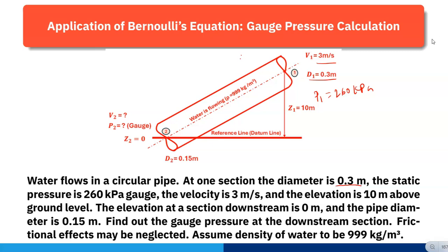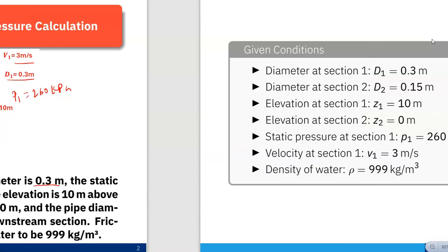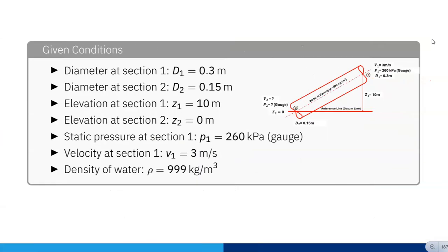Assume density of water to be 999 kg per meter cube. Now for given data: diameter d1 is 0.3 meter, diameter at section 2, d2, is 0.15 meter. z1 is 10 meter, z2 is 0 meter. p1 is 260 kilopascal gauge, velocity at section 1, v1, is 3 meter per second, and density of water rho is 999 kg per meter cube.